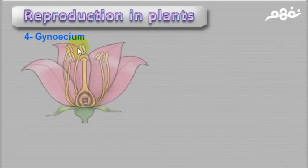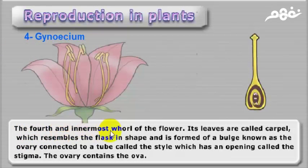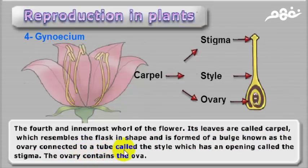Number four is the Gynoecium, the fourth and innermost whorl of the flower. Its leaves are called carpels, which resemble a flask in shape and are formed of a bulge known as the ovary, connected to a tube called the style, which has an opening called the stigma. The ovary contains the ovules.